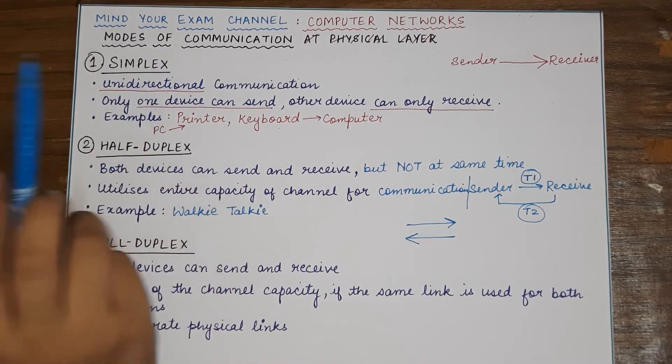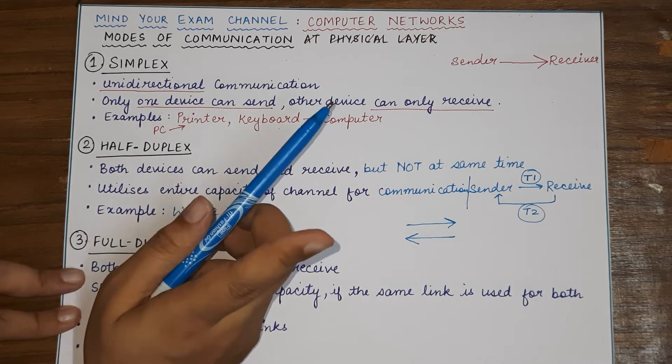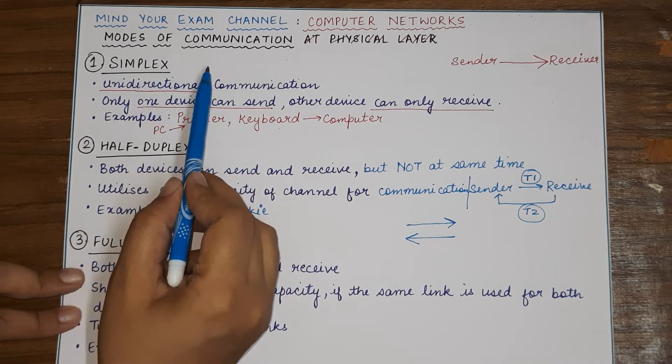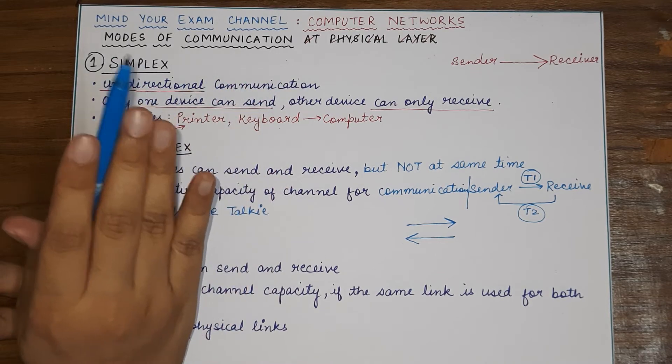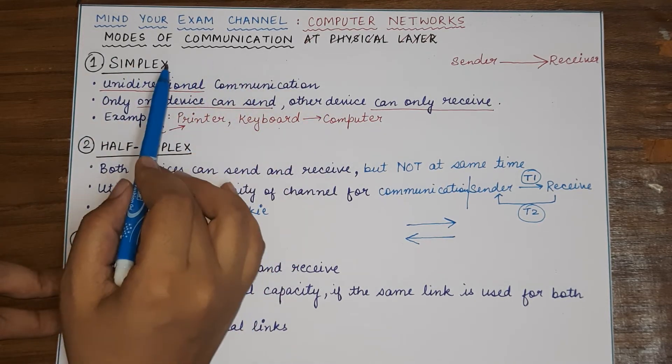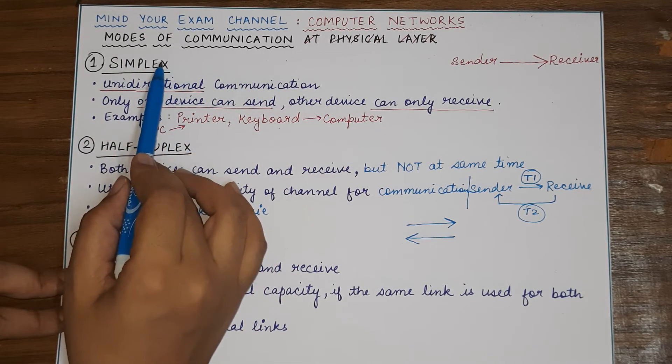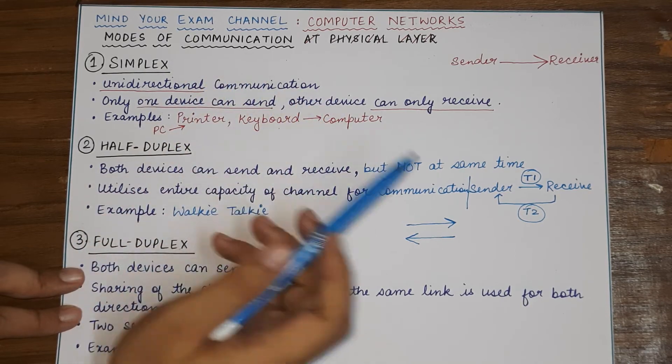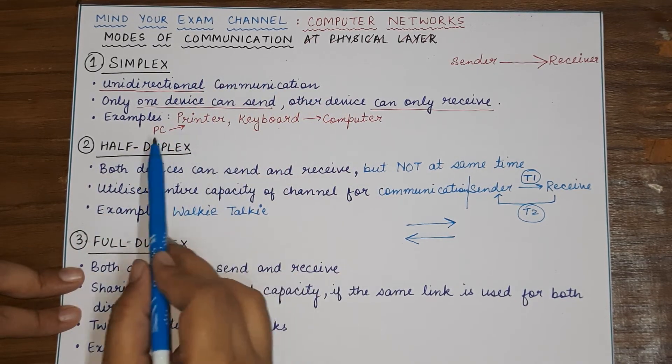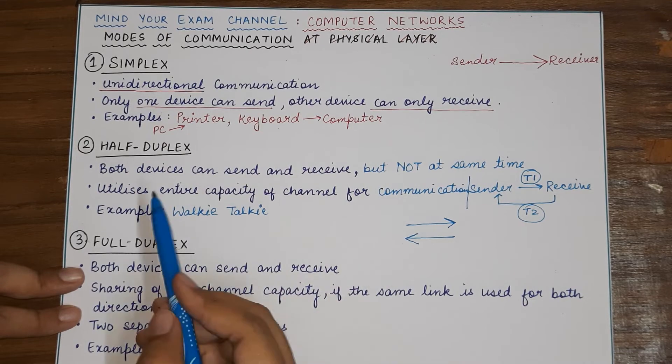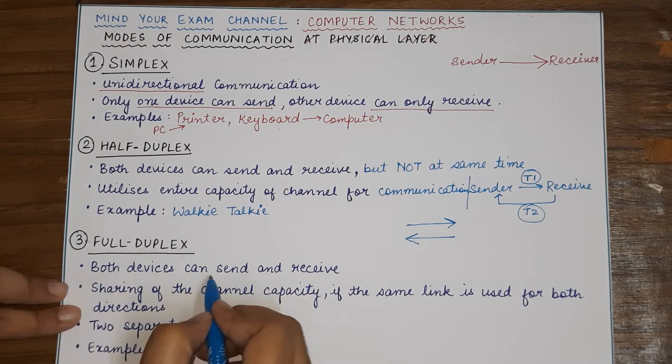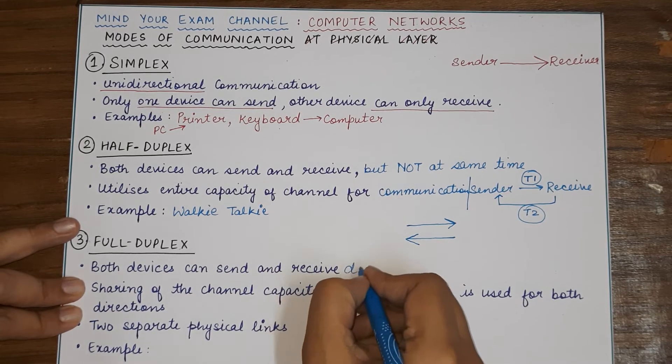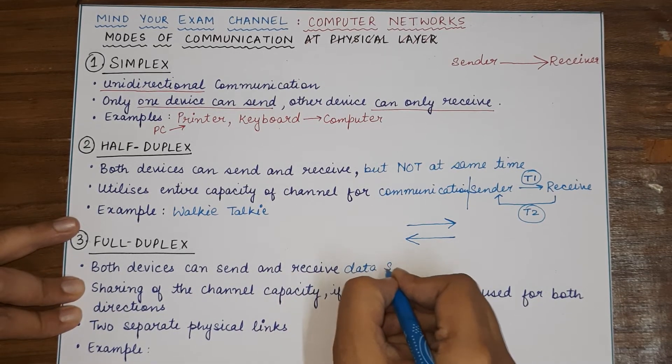So, simplex will only send data in one direction. It is like a communication between your boss and you. Most of the times, you generally cannot say something in front of your boss. So, the boss only gives you instructions. So, now a half-duplex can be a peer-to-peer communication. And then last is the full duplex in which both devices can send and receive data and that too simultaneously.